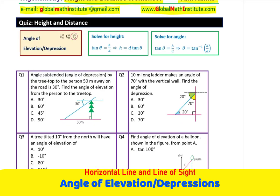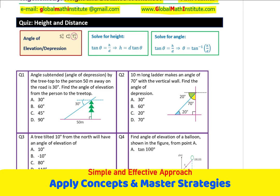Let us begin by solving them one by one. The very first question here is angle subtended, angle of depression by the treetop to the person 50 meters away on the road is 30 degrees. Find the angle of elevation from the person to the treetop, simple as that. So, it is a very basic question. We have given you the subtended angle.